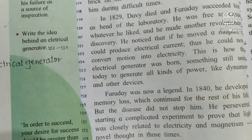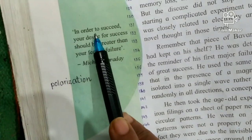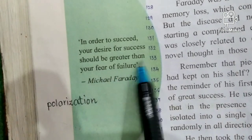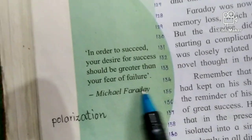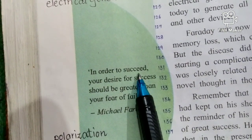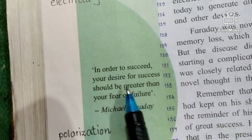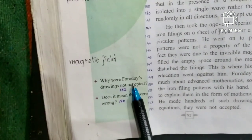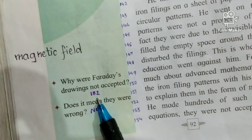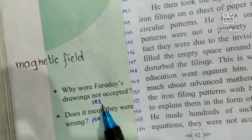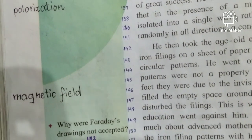In order to succeed, your desire for success should be greater than your fear of failure — this is a famous quote from Michael Faraday. Why were Faraday's drawings not accepted? Faraday's drawings were not accepted because he was unable to explain them in the form of mathematical equations. But this does not mean they were wrong.